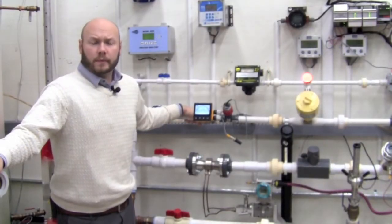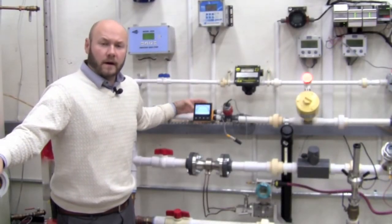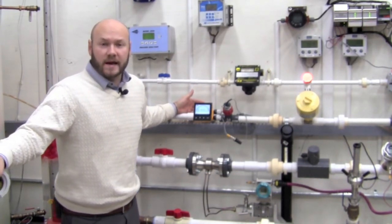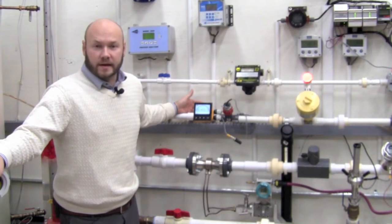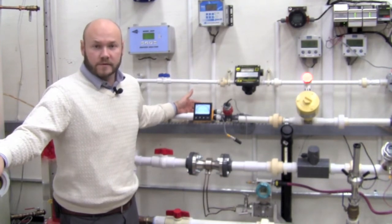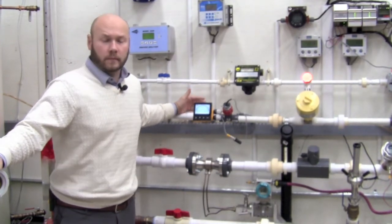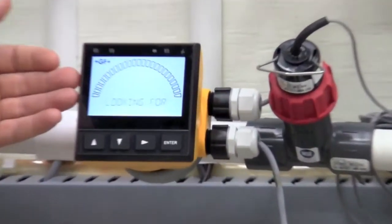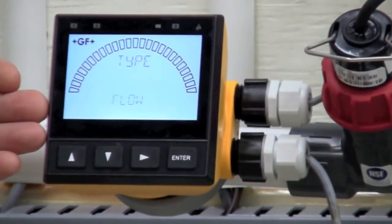In a previous video we went over how to wire up the unit. We're going to assume that has already taken place. We're now going to get into the programming of the unit. Once you've wired it up, you apply power to the unit. This is what you're going to see on your display. It's going to say looking for sensor, sensor type.